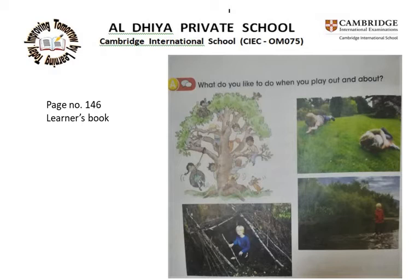There are some pictures of children playing outside. In the first picture you see some children climbing up a tree and playing. In the next one you see two children rolling down a hill. In the third picture you see a child playing with sticks, and in the last picture you see a child playing near the river. So what do you like to do when you go outside and play? Think about it.